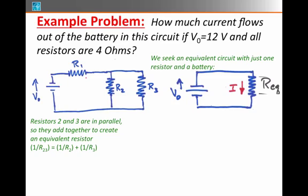Resistors 2 and 3 are in parallel so they add together to create an equivalent resistor: 1 over R23 equals 1 over R2 plus 1 over R3. You can plug in the values of 4 ohms for each of R2 and R3 and you find that this gives you 2 over 4 ohms. But that's equal to 1 over R23. Therefore R23 is equal to 2 ohms.